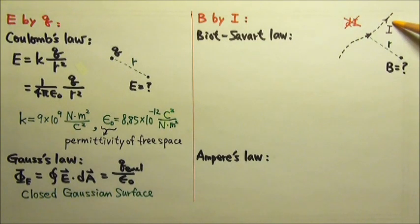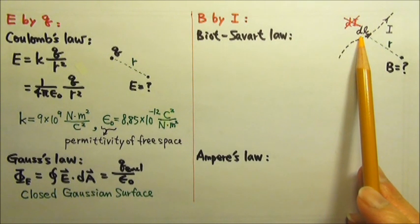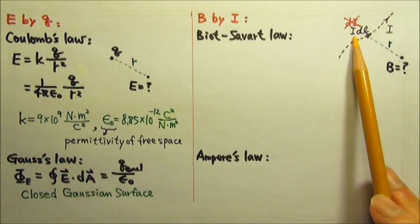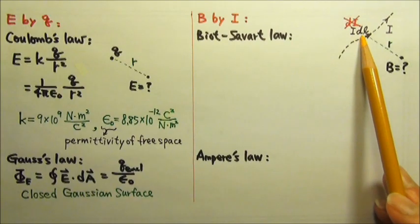If this current is 5A, the extremely short segment also carries 5A of current, not an extremely small amount of current. What is extremely small is the length dL, not the current. So the appropriate way to express this current source is I times dL.